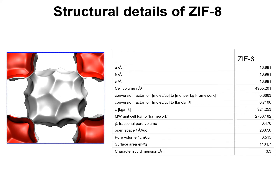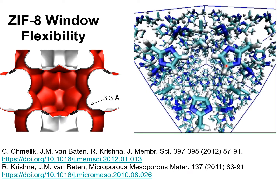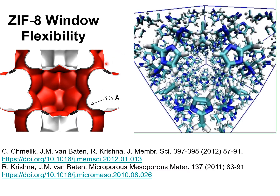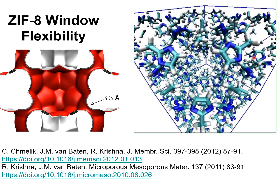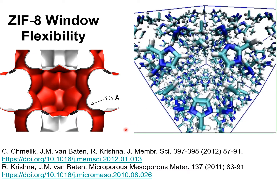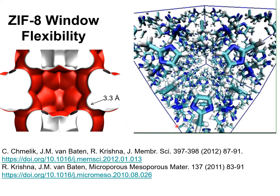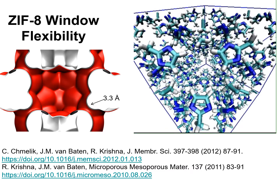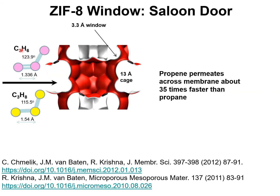But the windows are not rigid. They are flexible, as you can see in this simulation where we are looking from top to bottom. The windows open and shut just like saloon doors in a Quentin Tarantino film such as Hateful Eight or Django Unchained. This window flexibility is quite important in practice because large molecules such as propene and propane, with molecular dimensions larger than 3.3 angstroms, can diffuse through the windows.